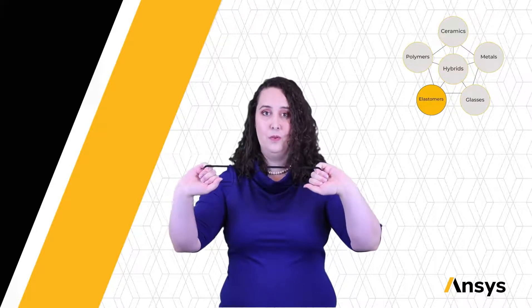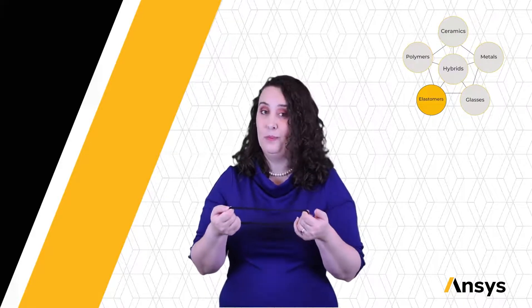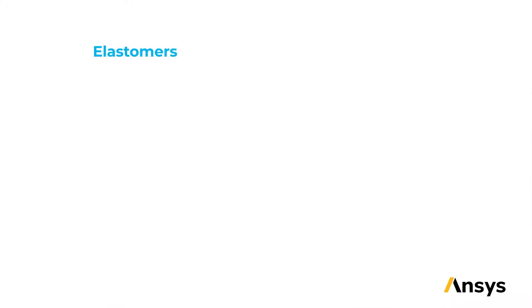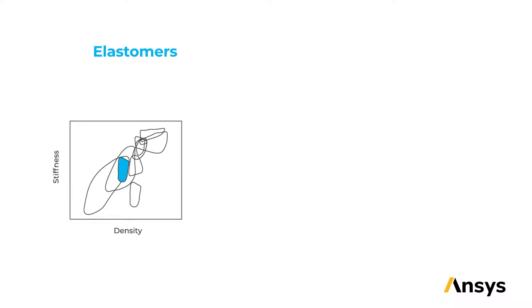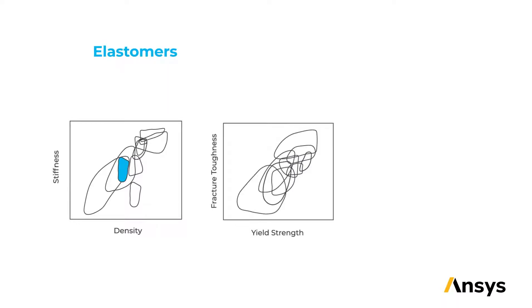When thinking of elastomeric materials, you might think of something like a headband. As you can see, it's able to deform elastically and return to its original shape. This elastic deformation is where we get the name elastomer, and it's perfect for a headband because of this property. Elastomers have very different attributes than the material families we've discussed so far. They're not very stiff, but they can be very dense — think of how heavy a car or truck tire is for its size. They also have lower fracture resistance than metals and some glasses, and they keep returning to their original state.